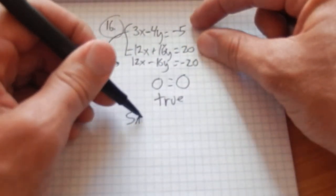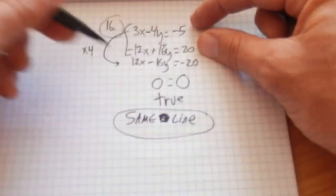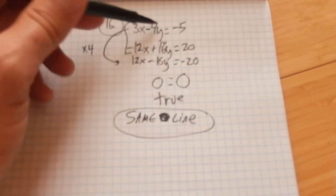This means that these are the same line. I have an infinite number of solutions. Whoops. Same line. An infinite number of solutions.